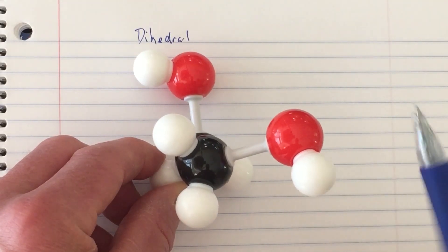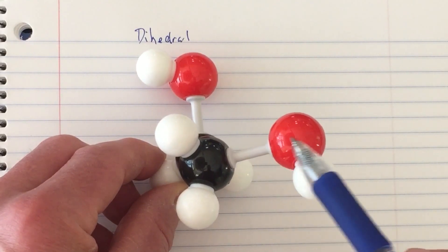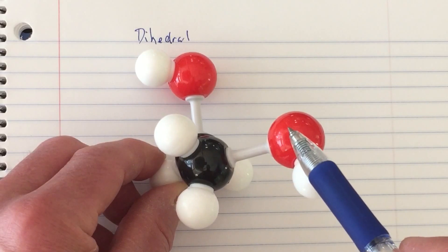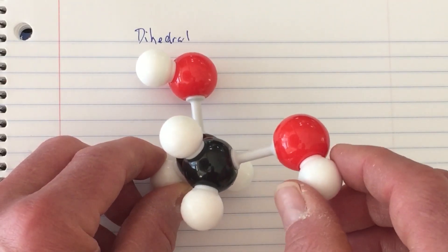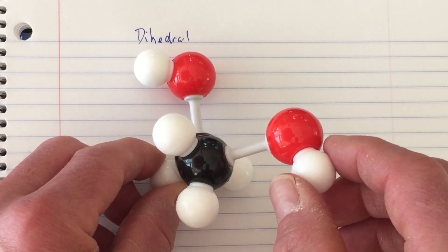We measure the angle starting with the group in front, rotating towards the group in the back. Because this is a counterclockwise direction, this would be a negative dihedral angle.